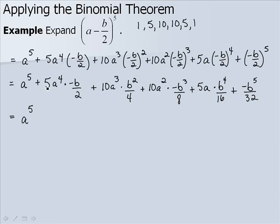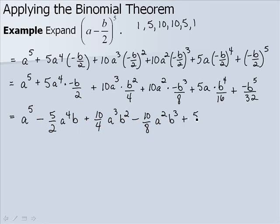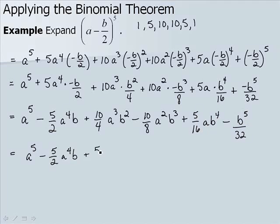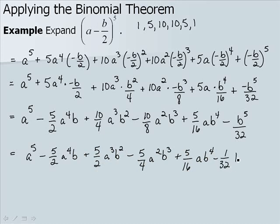Simplifying, we get: a to the 5th, minus 5 halves a to the 4th b, plus 10 fourths a to the 3rd b squared, minus 10 eighths a squared b to the 3rd, plus 5 sixteenths a b to the 4th, minus b to the 5th over 32. Reducing, our final answer is: a to the 5th, minus 5/2 a to the 4th b, plus 5/2 a to the 3rd b squared, minus 5/4 a squared b to the 3rd, plus 5/16 a b to the 4th, minus 1/32 b to the 5th.